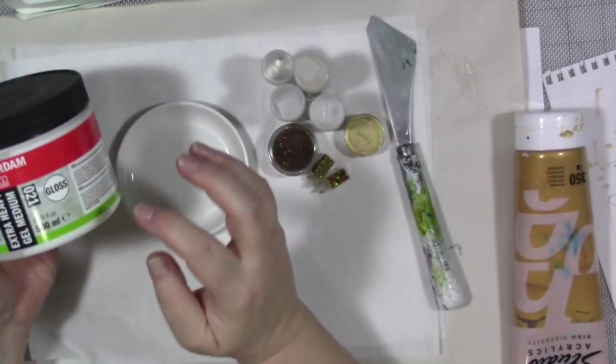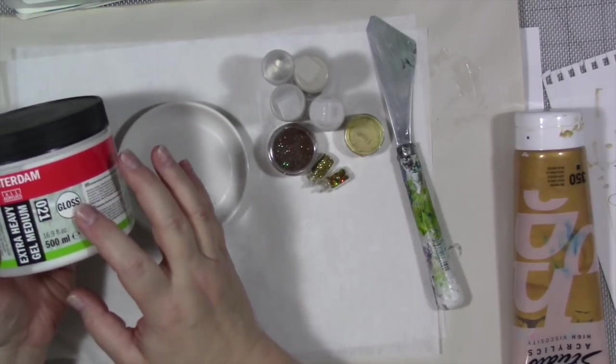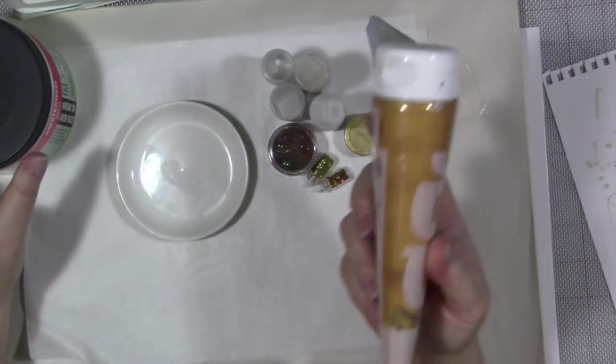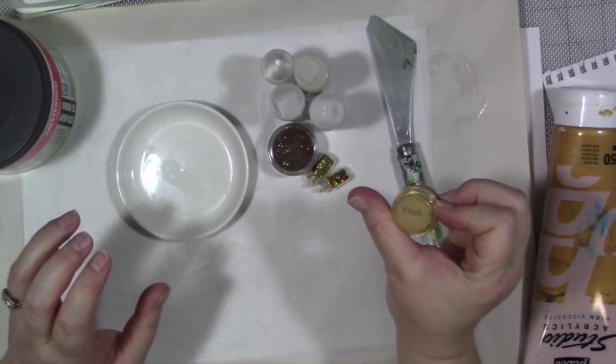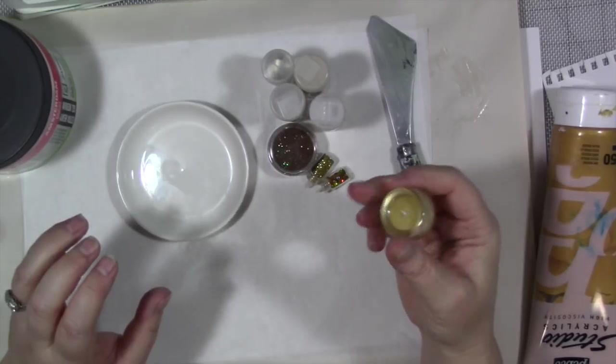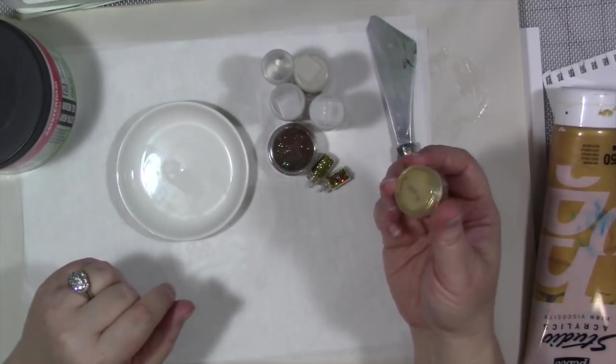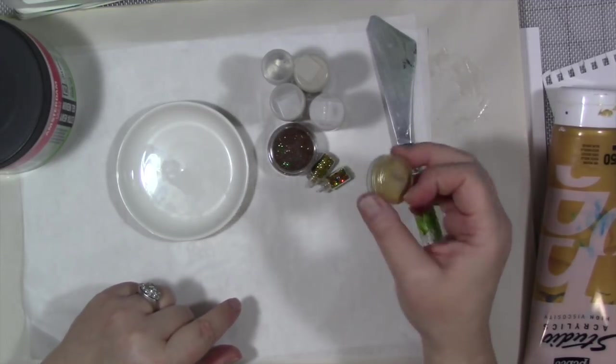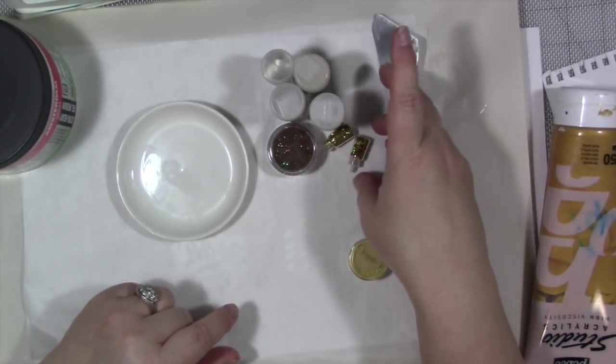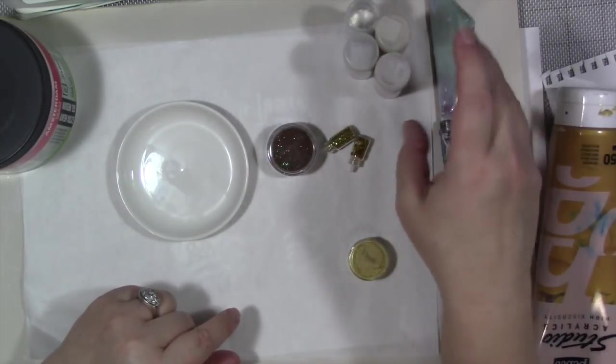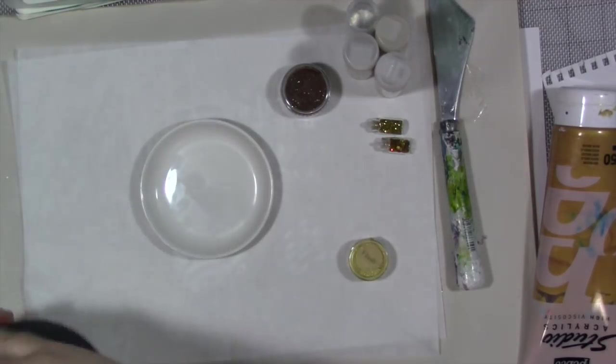So every episode will have two different ones in it. And for the first one, we're going to review one that I've done before, which I call melted metal paste. And for this, you're going to need some heavy gel medium gloss or extra heavy, the heavier the better. You'll need some metallic paint, some kind of pigment powder. I have a number of different ones. This is one I want to use up called Flash.